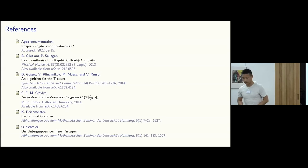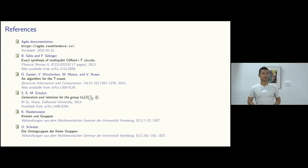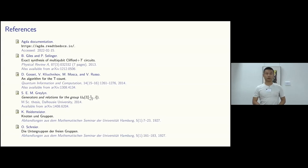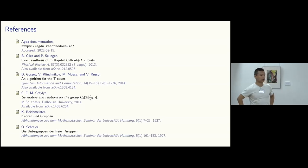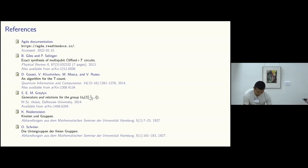Another question: the set of relations you provide is complete — is it also minimal? No, not minimal. For example, T commuting with control Z actually implies S commutes with control Z. Definitely not minimal.